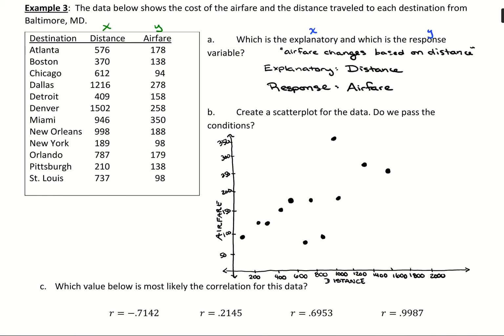Your graph should be looking something like this. For passing the conditions, what we want to see is is there any clear curvature to our data? It's not super linear but it's roughly linear. Yes, we do pass the conditions because the data is roughly linear.